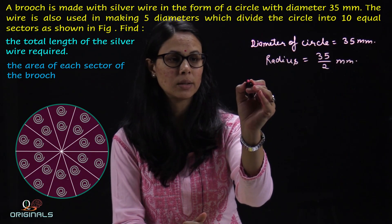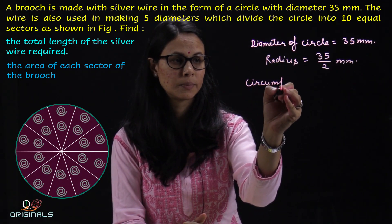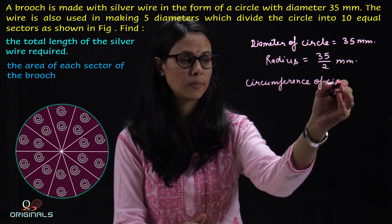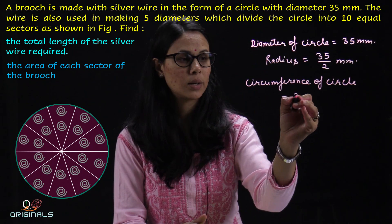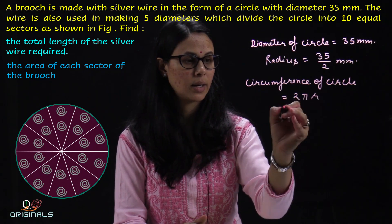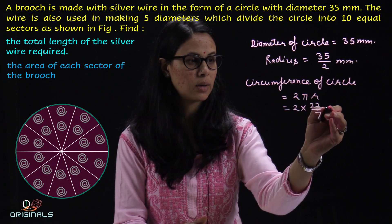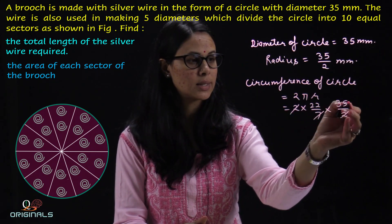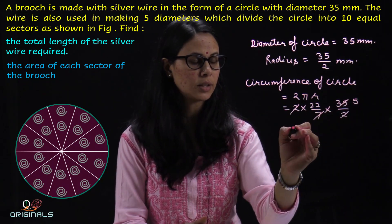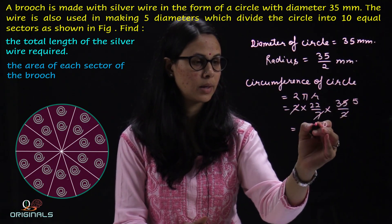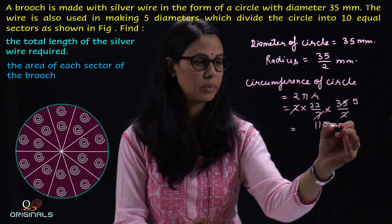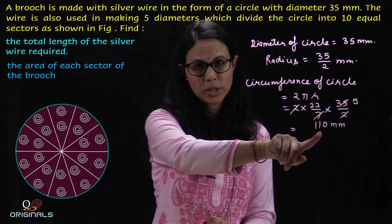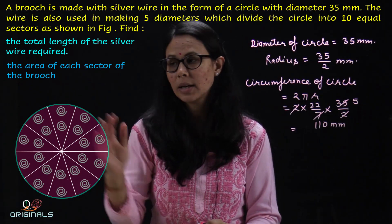The circumference of the circle is 2πr. So: 2 multiplied by 22/7 into r, which is 35/2. The 2 from numerator and denominator cancel, the 7 cancels with 35, giving us 110 mm. So 110 mm is the circumference of the circle.